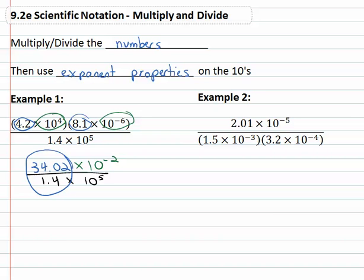Dividing 34.02 divided by 1.4, again using the calculator to help out, is going to be 24.3. Using exponent properties on the tens, times ten with division, you recall the exponent property says we must subtract. Negative two minus five is negative seven.